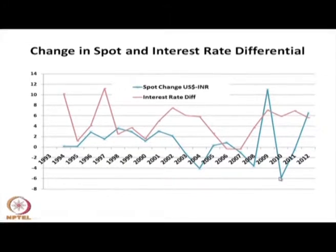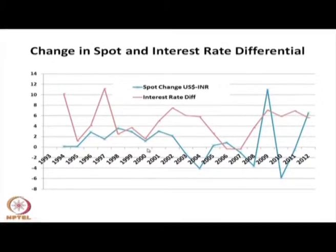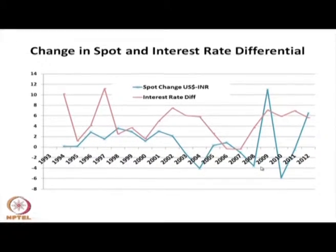The spot exchange rate volatility has transferred to the interest rate differential and to the money market. Whenever there is volatility in the spot market, it reflects in the interest rate and further reflects in the forward premium. There is thus a transfer of exchange rate volatility to the money market side. These two markets are highly interactive as the graph indicates.